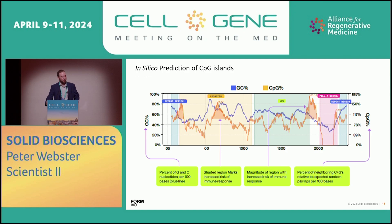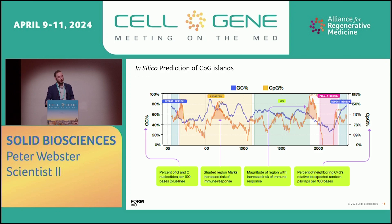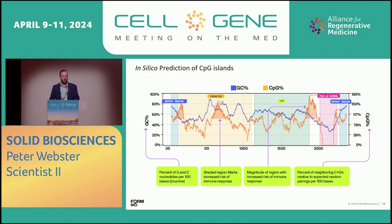Finally, we look at the prediction of CpG islands. Methylation of Cs and Gs can have a large immune impact, so in general we try to limit the amount of CpG islands. FormBio's AI allows us to look at the GC content throughout our genome and predict where we're likely to see methylation on these Cs and Gs. Taking this all together, we really have a holistic understanding of what we're likely to see in a produced vector.